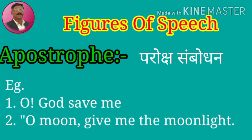For example, 'O God, save me' — in this sentence, an address to God is seen. Second sentence: 'O moon, give me the moonlight' — here also, moon (chandra) cha ulek yadhikarin keelela aplela deshto.